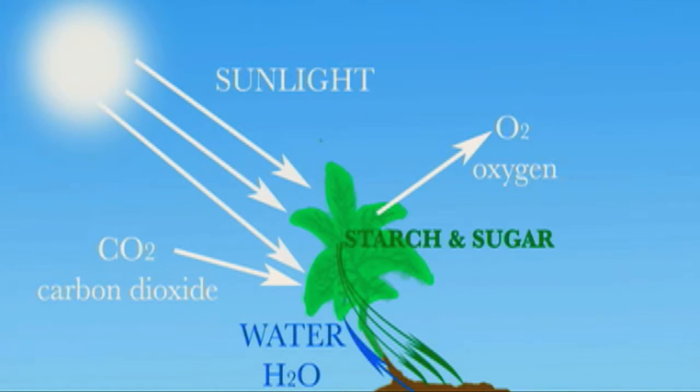Photosynthesis started about two and a half billion years ago when bacteria evolved to change sunlight into food. Sugar and starch came from carbon dioxide and sunlight, with oxygen being the waste.